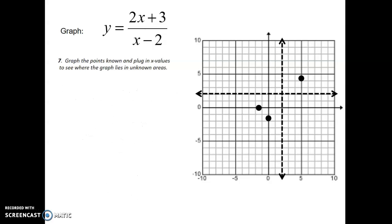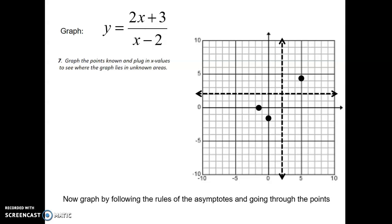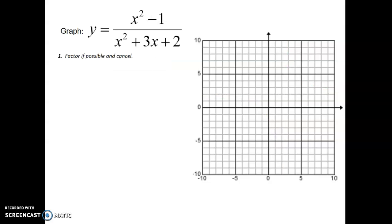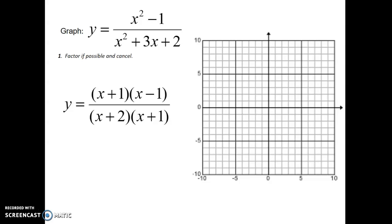So we graph this following the rules of the asymptotes — not going through them — and it goes through the points. That's one example done. Part one of this video goes through one more. Next example, we have x squared minus one on the top and x squared plus 3x plus two on the bottom. In this case we can factor, and there is going to be something you can cancel. Here's the factorization for each of the quadratics. You have x plus one on the top and x plus one on the bottom — these cancel out. You're left with x minus one over x plus two for the remainder of the steps.